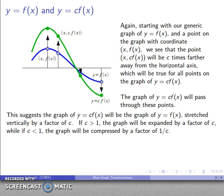If c is greater than 1, this looks like an expansion by a factor of c. If c is less than 1, it's going to be compressed by a factor of 1 over c. For example, if c is one-half, then the compression factor 1 over one-half equals 2, so the graph gets squashed to half its size.